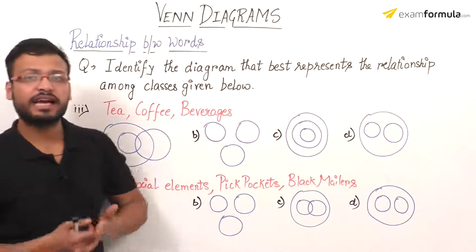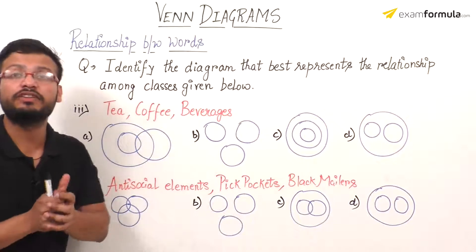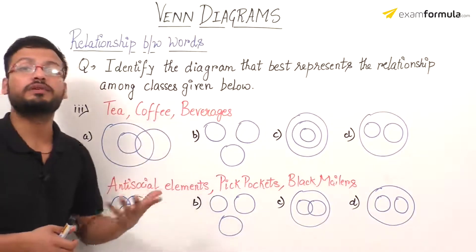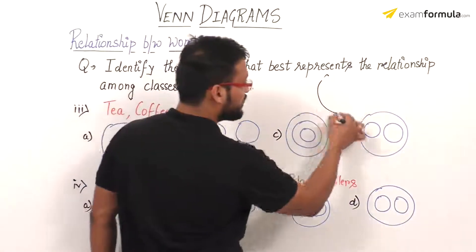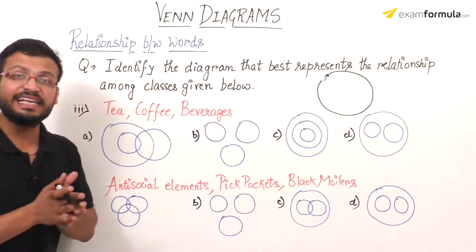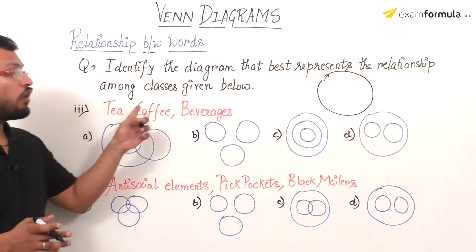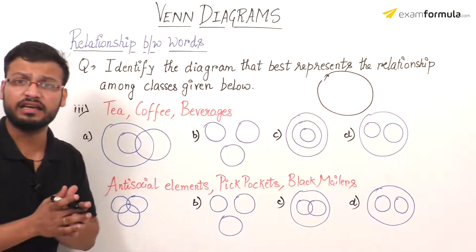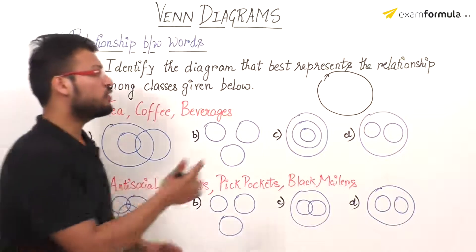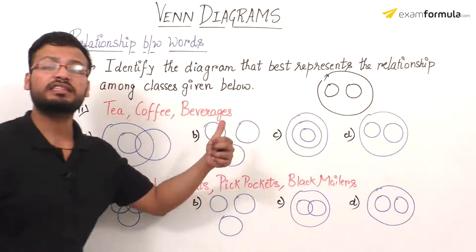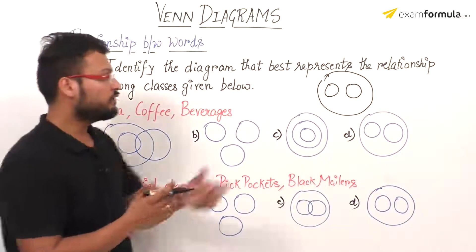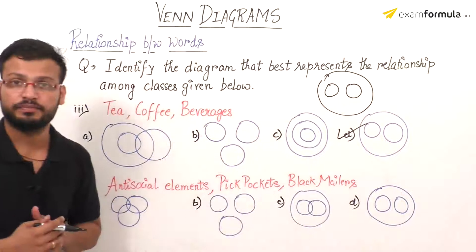Next question: the three words are tea, coffee, and beverages. I can easily say that tea and coffee are types of beverages. So first, I'll consider beverages as the outer circle, and tea and coffee will be represented inside it. Next, I have to consider the relationship between tea and coffee — they are not interconnected with each other; they don't have any relationship with each other. So tea and coffee will be represented inside beverages but will not be related to each other in any way.